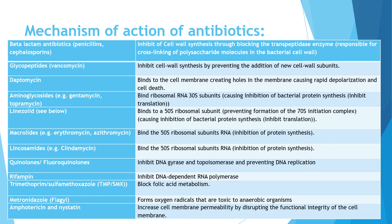Two antibiotics work on the DNA and RNA itself: the quinolones and fluoroquinolones, which inhibit DNA gyrase and topoisomerase, thereby inhibiting DNA replication. Rifampin, used for long-term suppression and classically for TB, inhibits the DNA-dependent RNA polymerase, blocking the formation of RNA from DNA. So these two antibiotics work on DNA replication and RNA formation respectively.